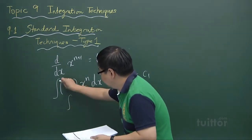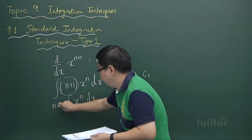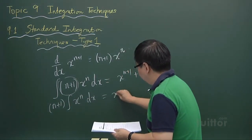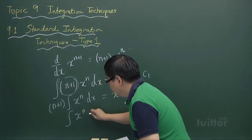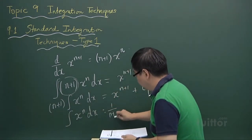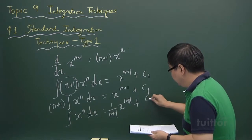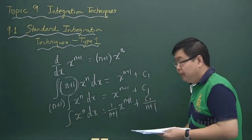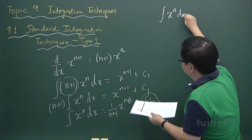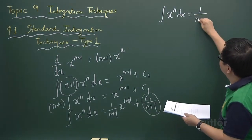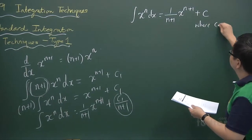So taking this constant out from the integration, we have the integral of x to the power of n dx with n plus 1 in front, and that gives x to the power of n plus 1 plus c1. Dividing throughout by n plus 1, we have the integral of x to the power of n as 1 over n plus 1 multiplied by x to the power of n plus 1, plus c1 over n plus 1. Replacing c1 over n plus 1 with a new constant c, we get the final result, which is already shown in your handout, where c is an arbitrary constant.